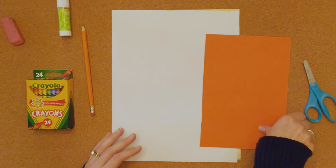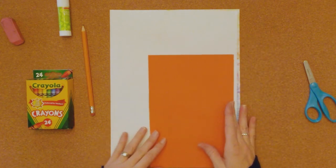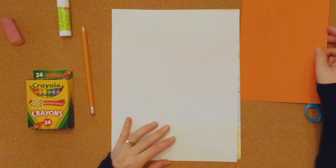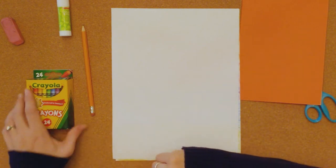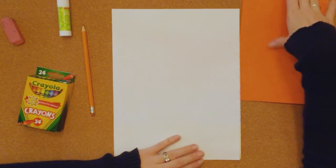Alright so we've got our orange paper, our white background. So let's do the background first. Yeah I think we want to do that today. We're going to make a background for our teepee.